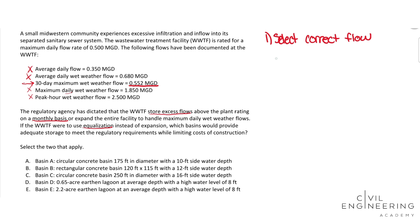So we will take 0.552 MGD minus our plant's rating at 0.5 MGD, and we will get an excess of 0.052 MGD.